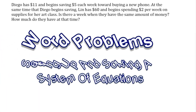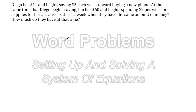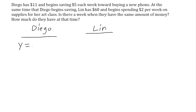In this tutorial, we are going to solve a word problem by setting up a system of equations. What we're going to do is write an equation that represents Diego's situation, and then set up an equation that represents Lynn's situation. We're going to set up our equations in y equals mx plus b form.